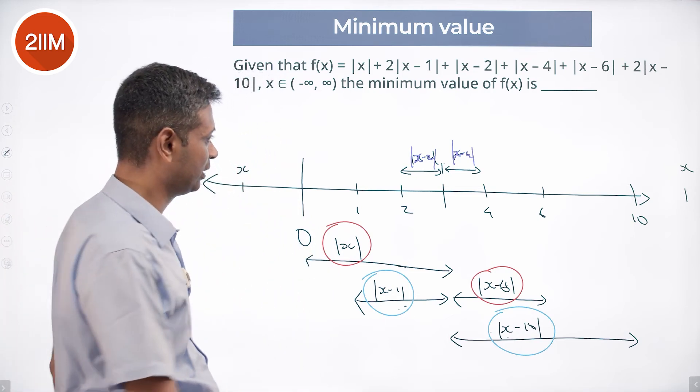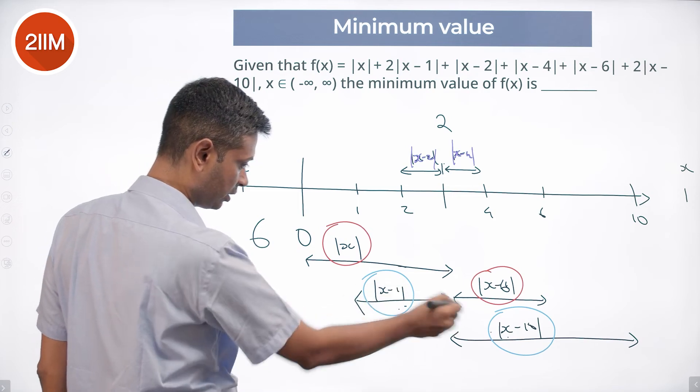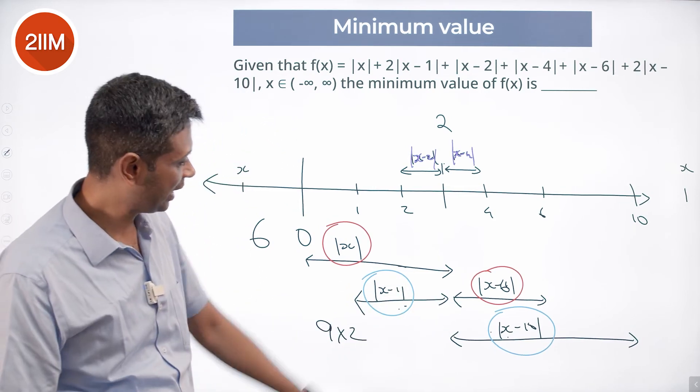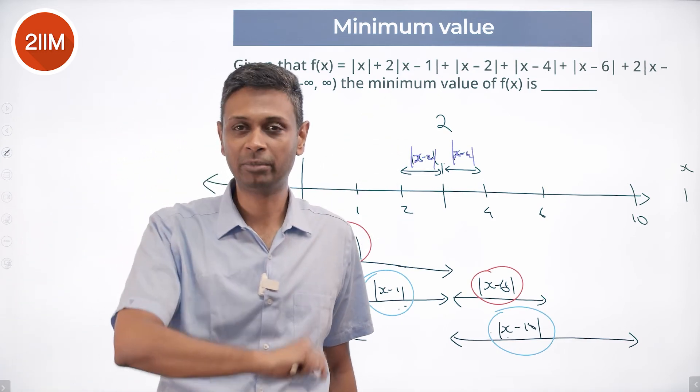Or effectively, we have 2, we have 6, we have 9 into 2. 9 into 2 is 18 plus 6 is 24 plus 2 is 26. That is the minimum.